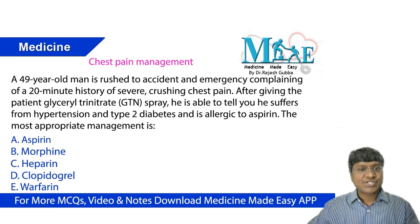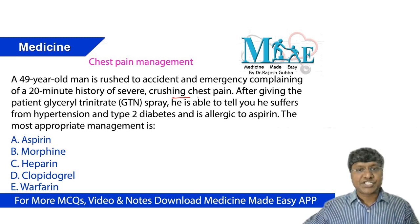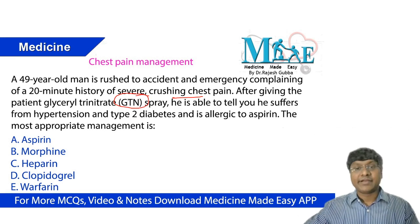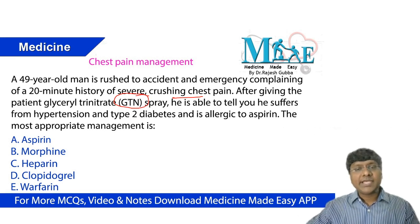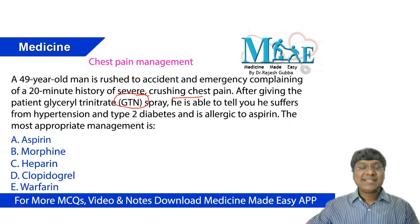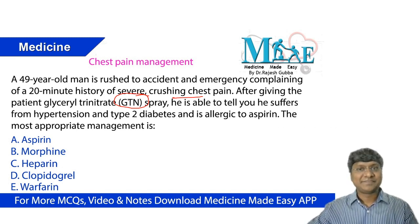Now you take the history and see how the chest pain is progressing. It's a 20-minute chest pain, crushing in nature, and that particular chest pain is getting relieved by nitrates. So what do you think is the underlying etiology of this particular pain? You have to think of underlying coronary artery disease as the underlying etiology.